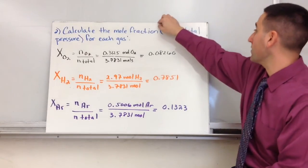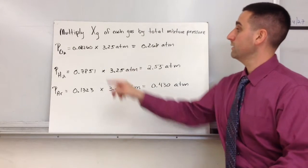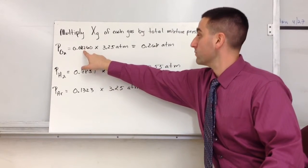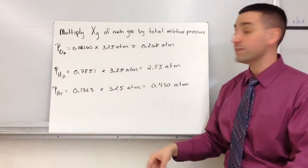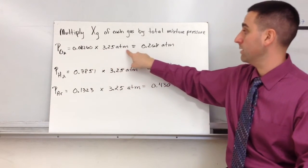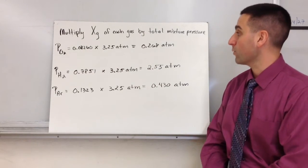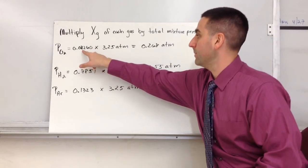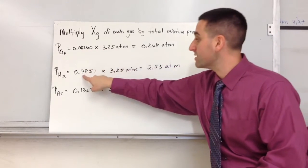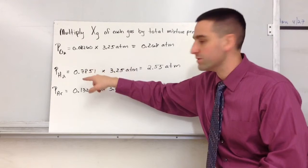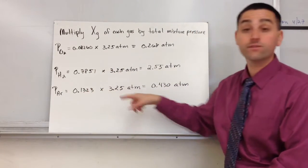Now to find out the total pressure, I would simply take the mole fraction of each gas, which is the first number here, and multiply that - if you remember, this was our total pressure of all three gases given in the problem. So in other words, what is 8% of the total pressure? What is 78% of the total pressure? What's 13% of the total pressure?